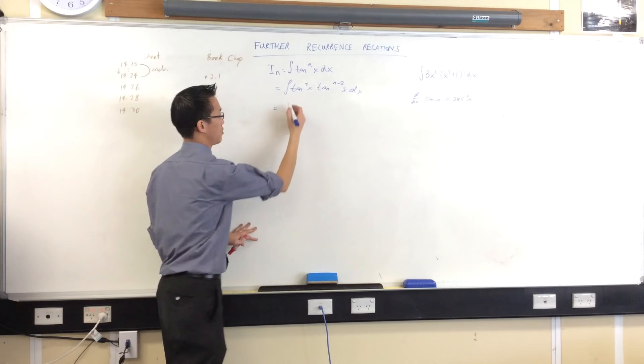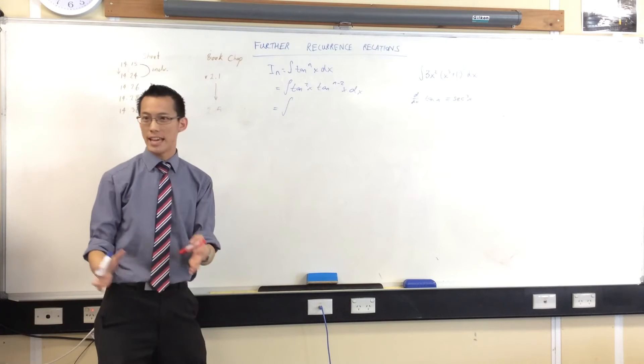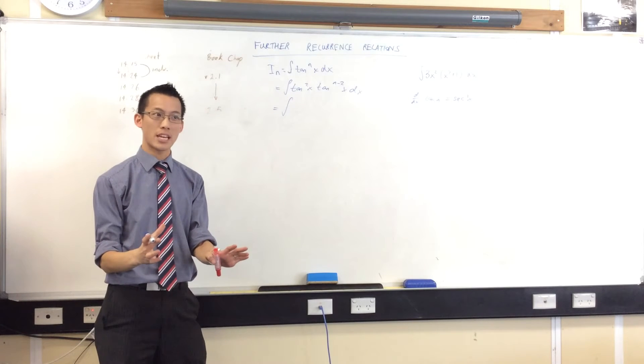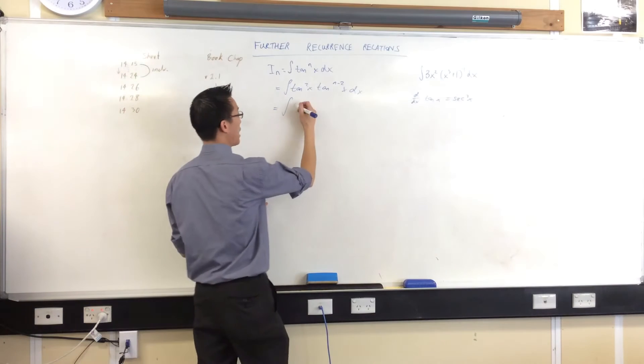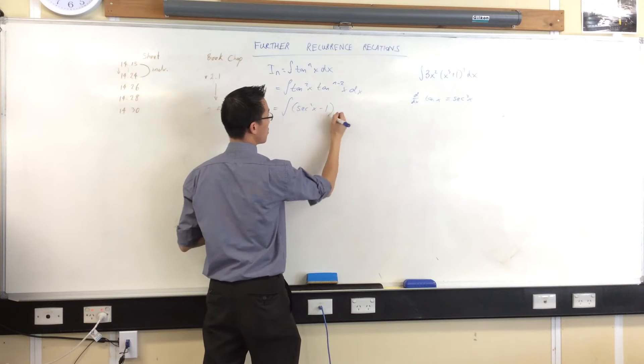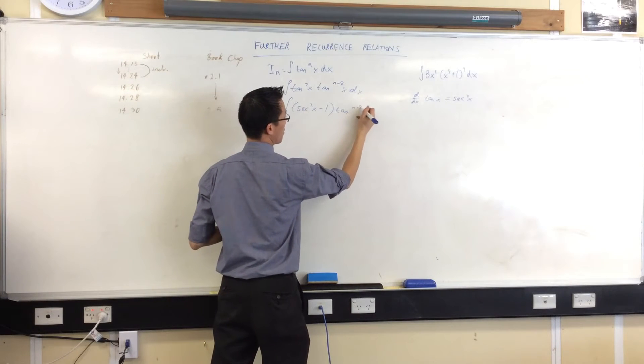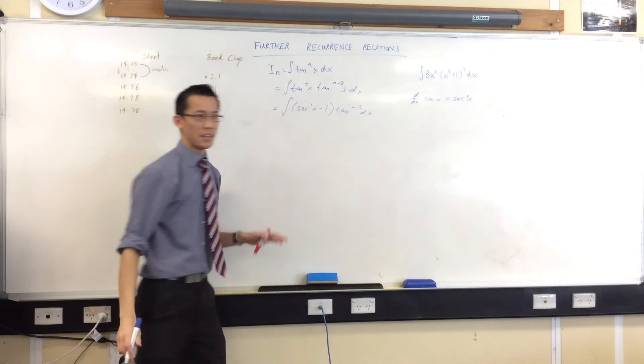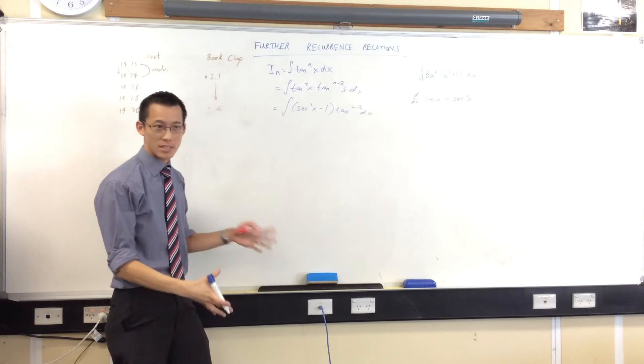So what's this going to be equal to? Well, we just said tan squared, what's it equal to in terms of sec? Sec squared minus one. Okay, this doesn't look all that nice, but stay with it.